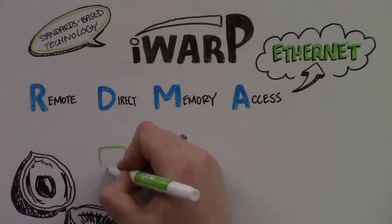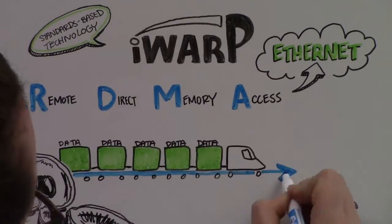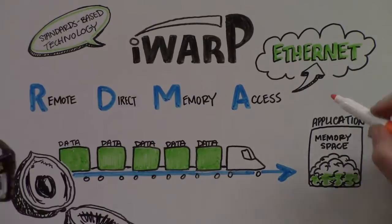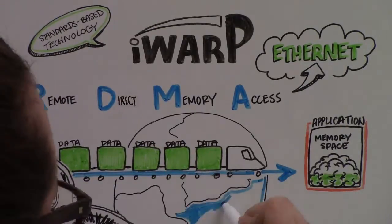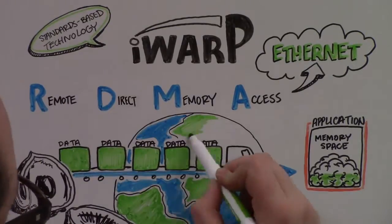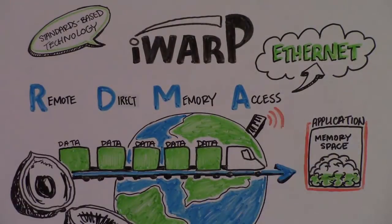In a nutshell, RDMA allows an application to place a block of data directly in the memory space of another application in a very efficient manner. The destination can be an application in a virtual machine in a different server anywhere in the world.